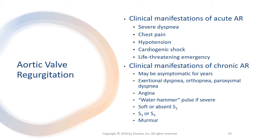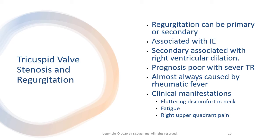Patients with chronic severe aortic regurgitation develop a water hammer pulse — a strong, quick beat that collapses immediately. Heart sounds may include a soft or absent S1, S3 or S4, and a soft, high-pitched diastolic murmur. The patient with chronic aortic regurgitation is generally asymptomatic for years. Exertional dyspnea, orthopnea, or proximal nocturnal dyspnea develop only after considerable heart dysfunction has occurred. Angina is less common with aortic regurgitation than with aortic stenosis.